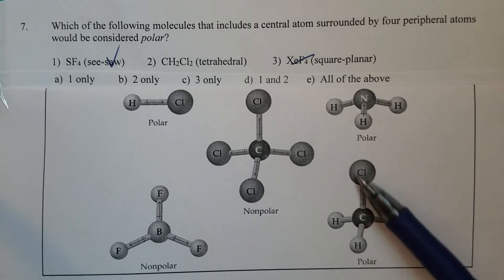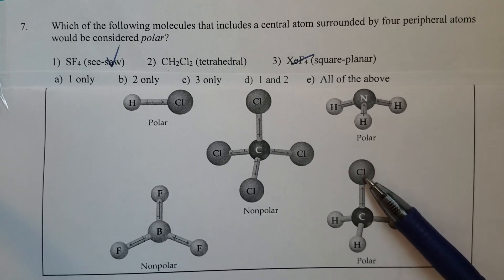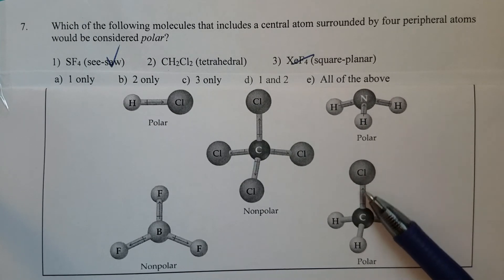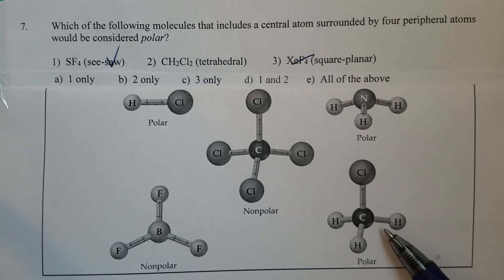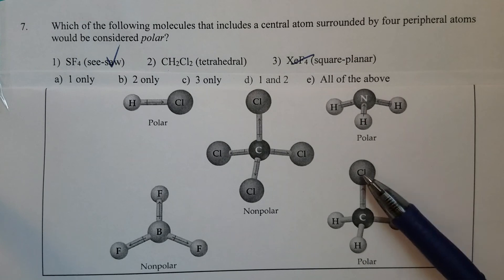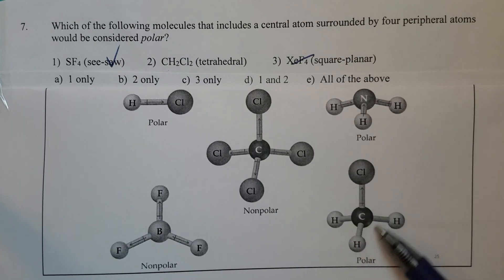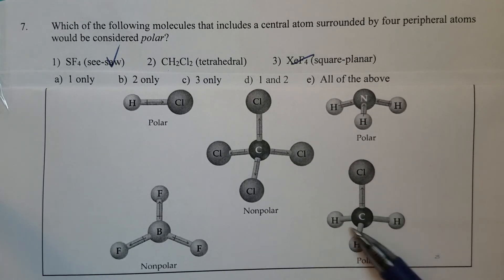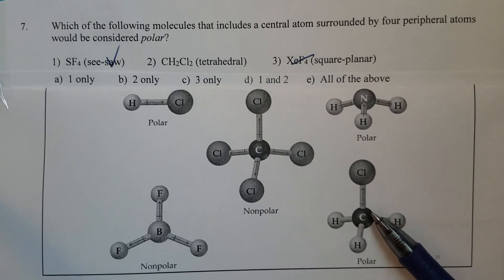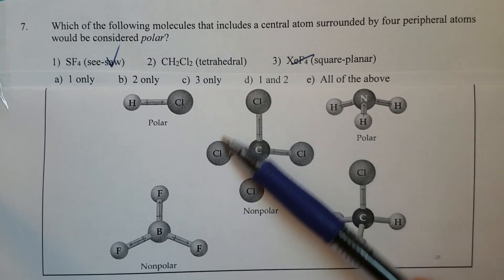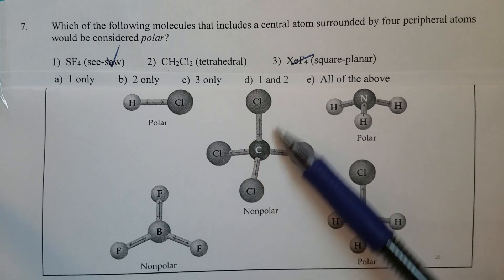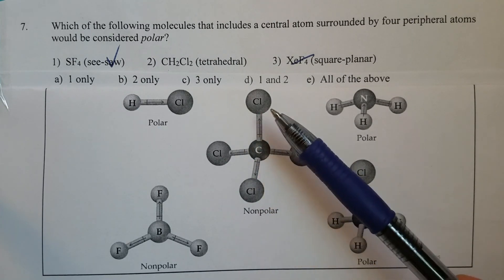But since the polarity of the C-Cl bond is different than the C-H bonds, the dipole moments in this molecule cannot be cancelled each other. In those identical peripheral atoms molecules, they can be cancelled. That's why it's non-polar.